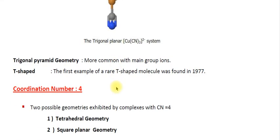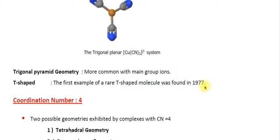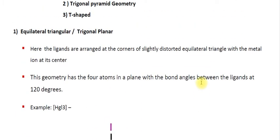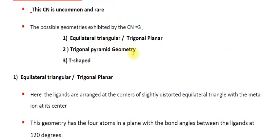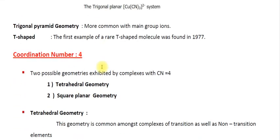The trigonal pyramidal geometry is more common with main group ions. The T-shaped geometry is a rare arrangement — the first example of a T-shaped molecule was observed in 1974. So coordination number 3 exhibits three geometries: trigonal (equilateral) planar, trigonal pyramidal geometry, and T-shaped geometry.